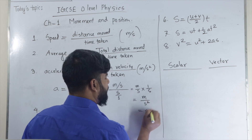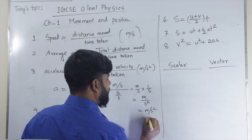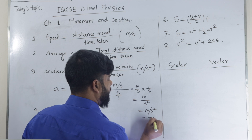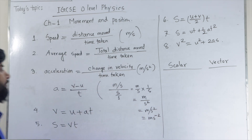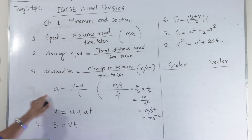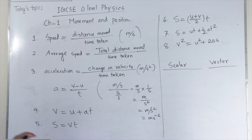So we can write meters per second squared, or meters per second per second. That is why the unit of acceleration is meters per second squared.